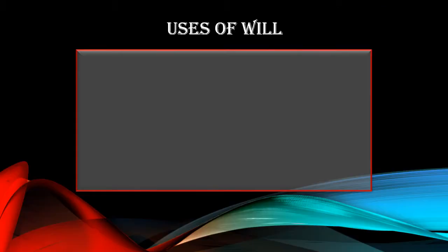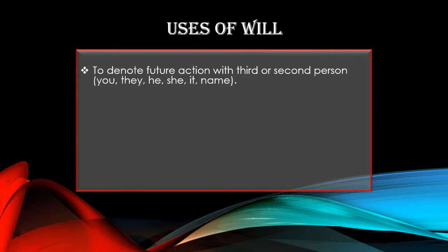In the previous chapter we covered four modals: will, shall, would, and should. Let's revise the uses of 'will.' First, will is used to denote future action with second and third person — you, they, he, she, it, and names. With these subjects we use 'will' to denote simple future action.